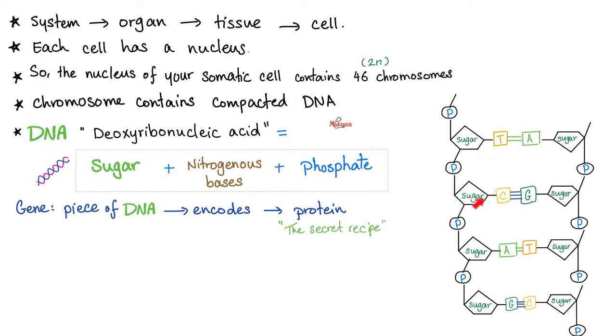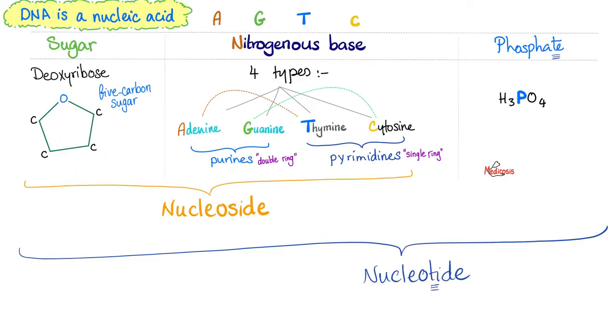DNA is sugar, nitrogenous bases, and phosphate. Let's say we want to cook a meal. What's the end result? What's the meal? Protein is the meal. Where do I find the recipe written? The recipe is written on paper. DNA. DNA, or the nucleic acid, sugar, nitrogenous base, phosphate. What kind of sugar? In DNA, it's deoxyribose.